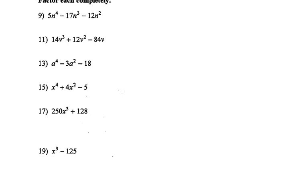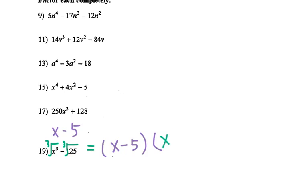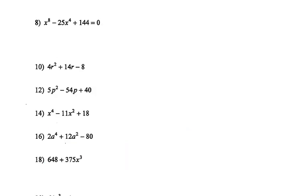Now let's go to number 19. This is cubic factoring. Take the cubic root of x cubed and the cubic root of 125. You get x minus 5. So write down (x − 5), then the first term squared is x squared, the sign changes to plus giving plus 5x, and then 5 squared is 25. That's for number 19.